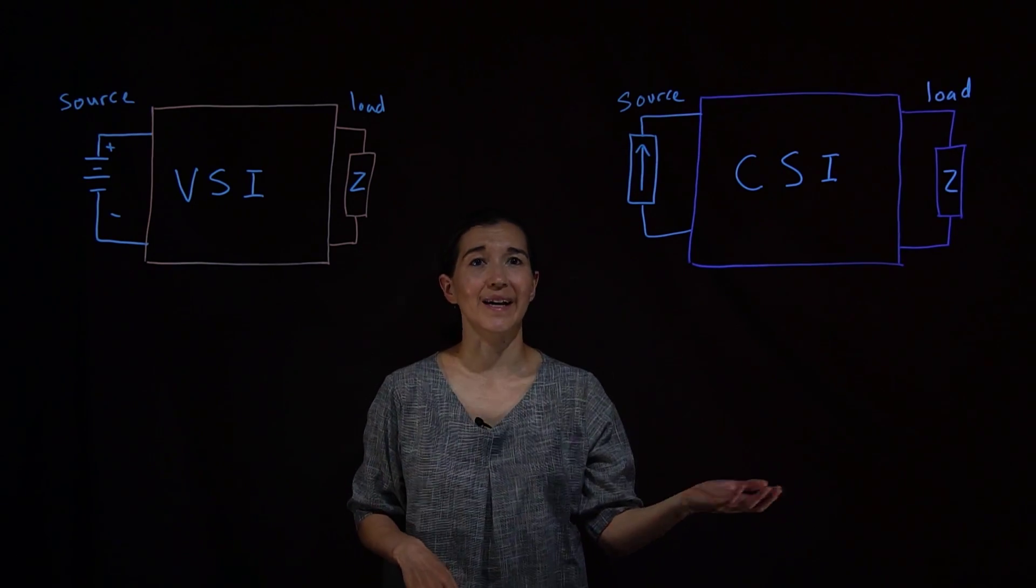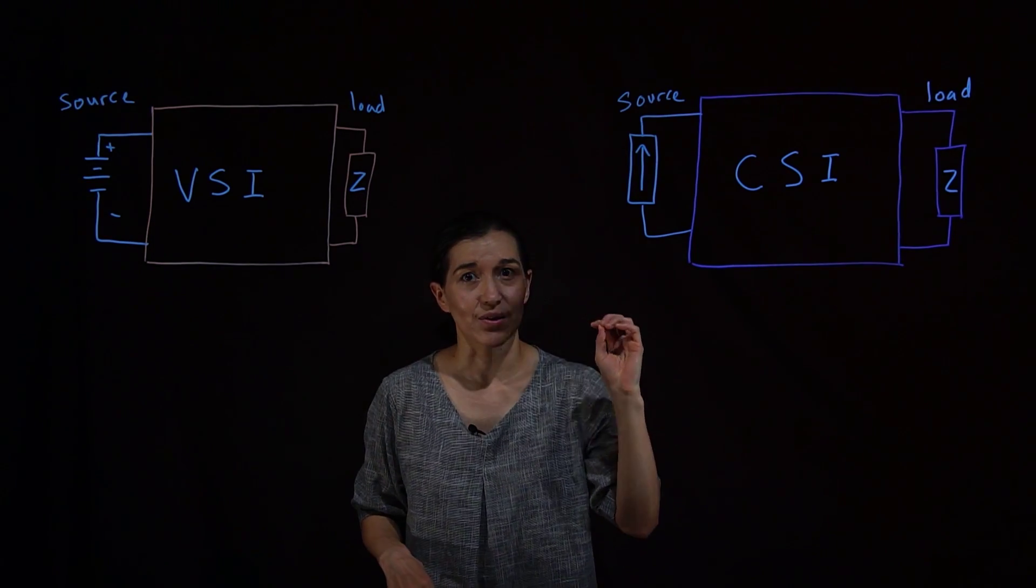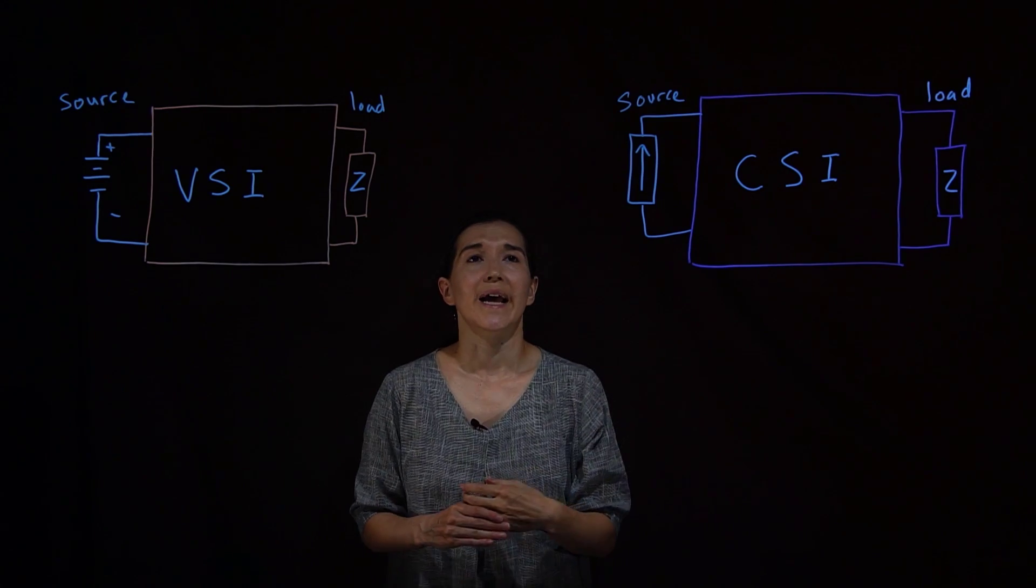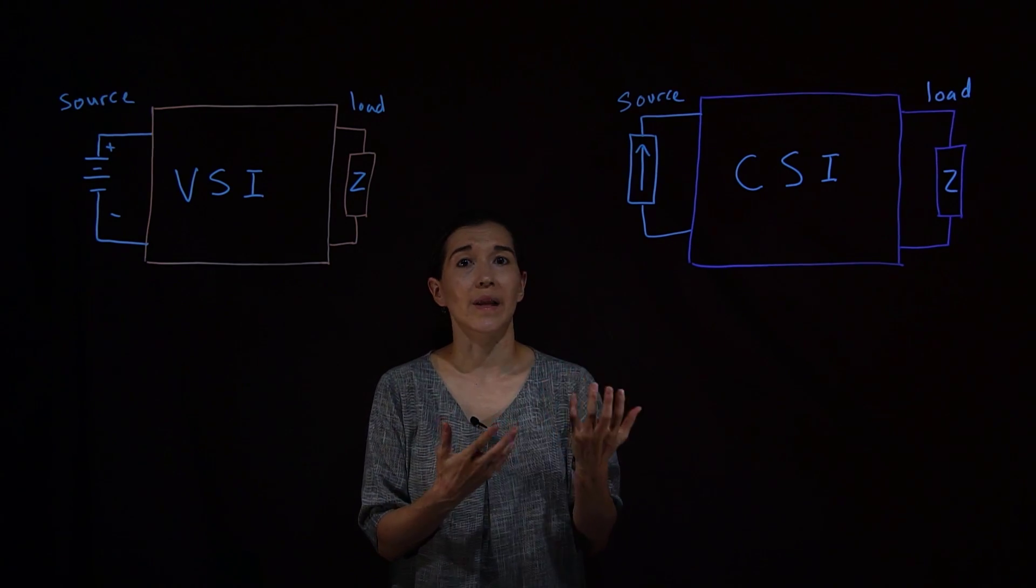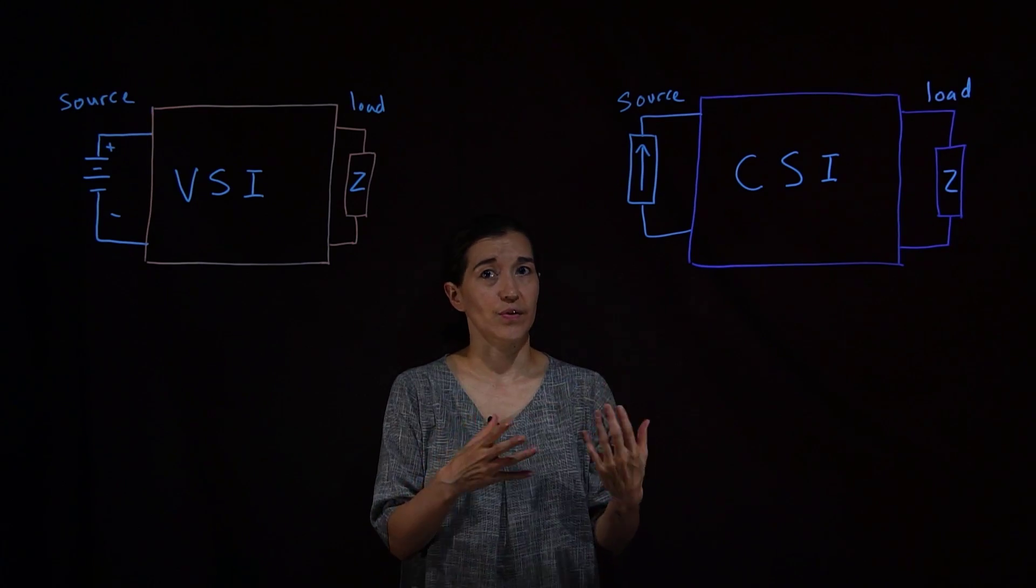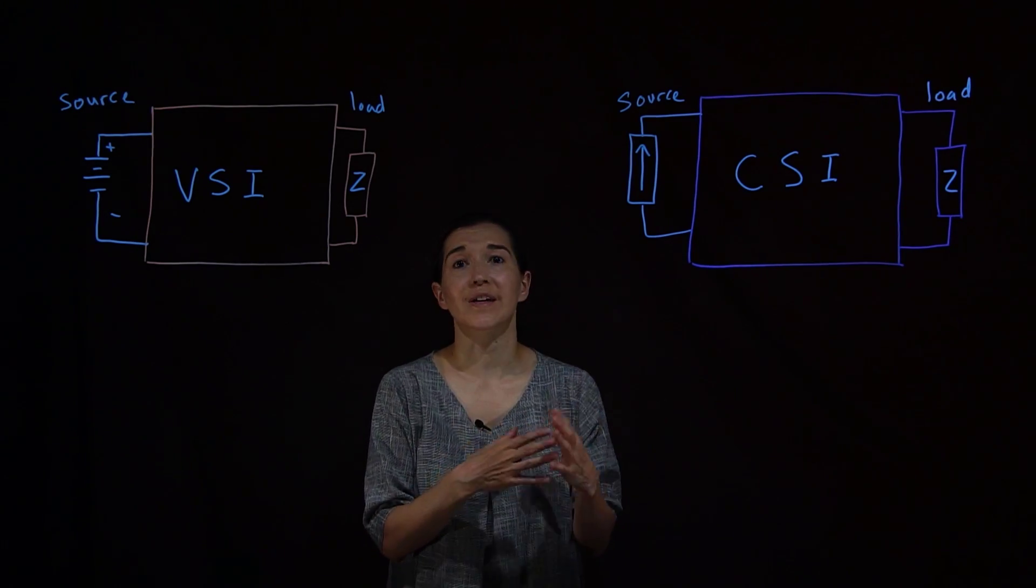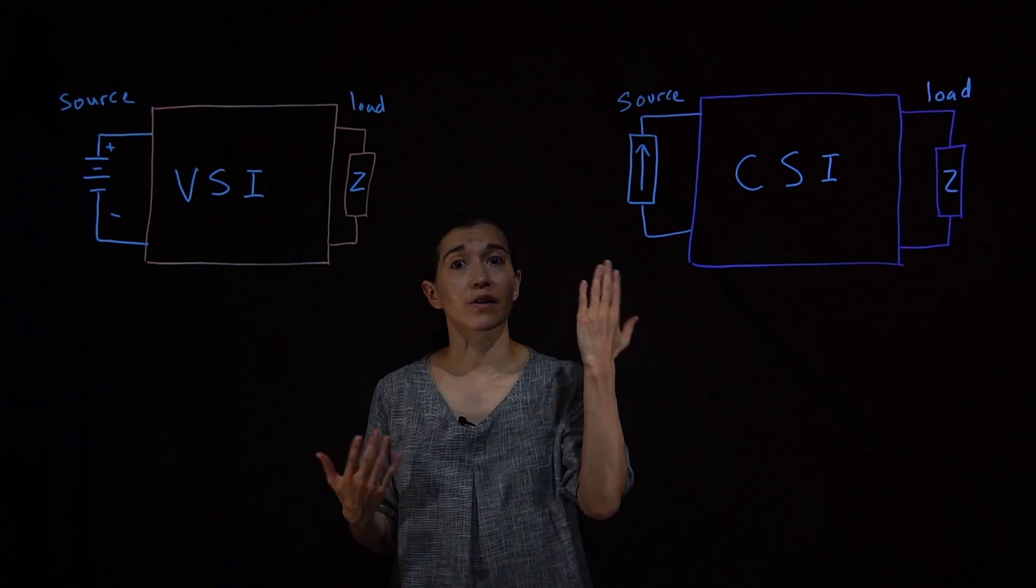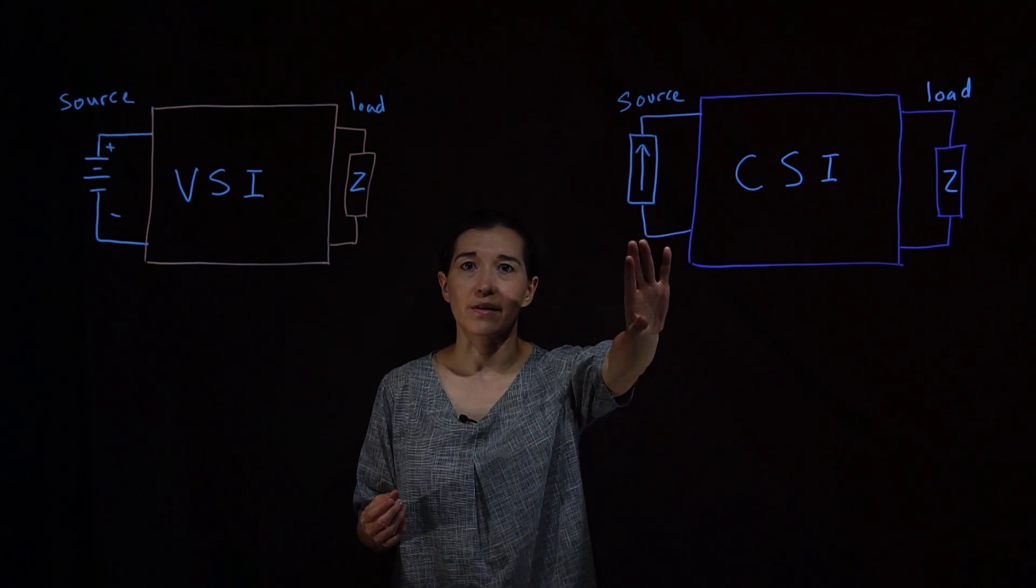The other side is the current source inverter and this is where the input is more like a current source. It probably has some sort of inductive characteristics so its current is going to be very consistent. So we model that as a current source.